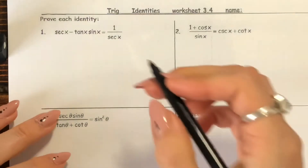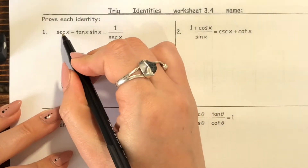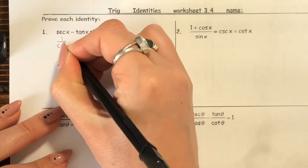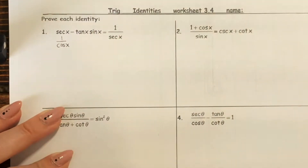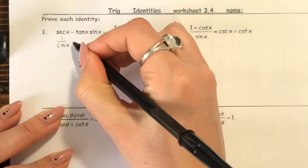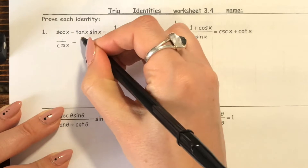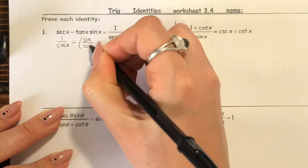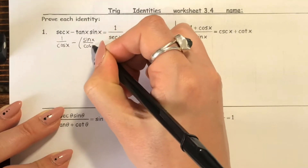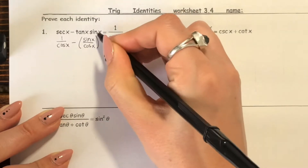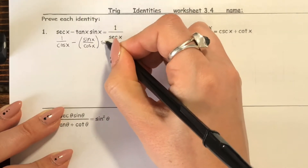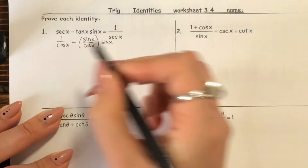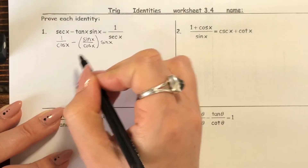On this first example, we know secant is the same as one over cosine, so I'm going to change it to that. And then tangent is the same as sine over cosine. And then I would just keep the sine here because it's already in sine form. And then you would simplify.